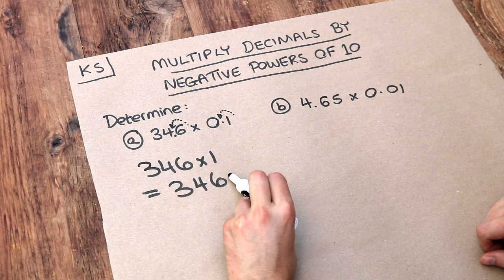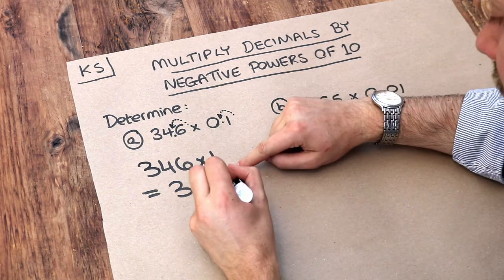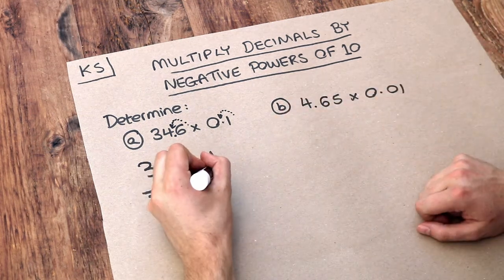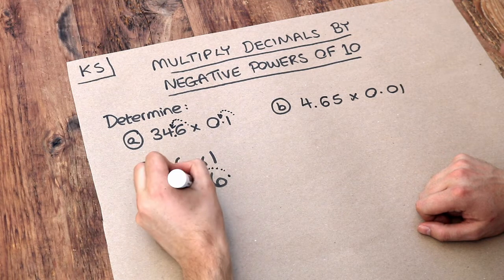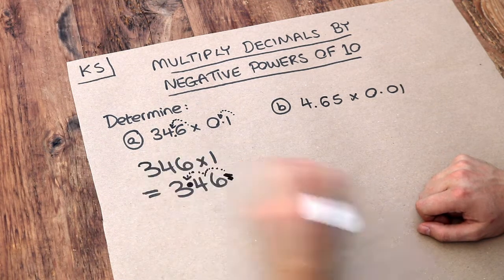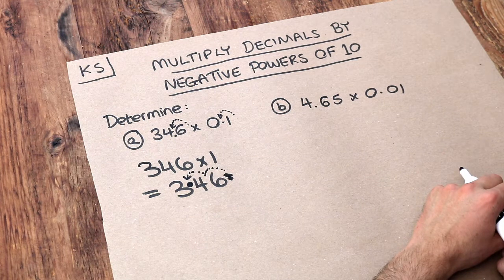So the decimal point in 346 is originally at the end, we've got a decimal point here, we move it twice, so once, twice, and we get 3.46. So the answer is 3.46.